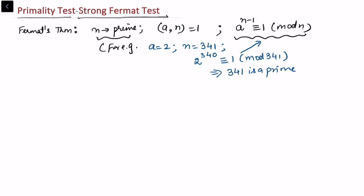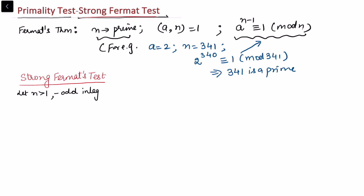Now we introduce the strong Fermat's test. We choose an integer n greater than 1, and we consider n to be an odd integer. Since we are checking primality, the only even prime is 2, so all other primes are odd. We write n minus 1, which is an even integer, as 2 to the power k into s, where s is odd and k is greater than or equal to 1.